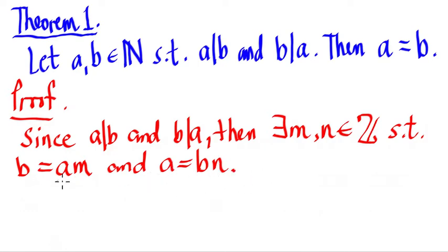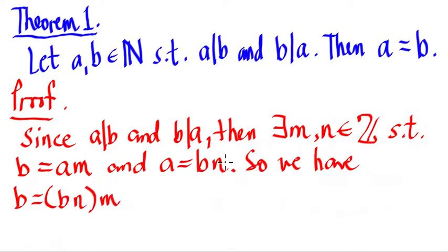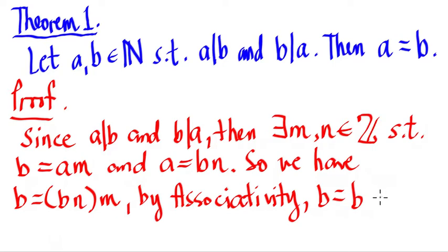We will try to substitute: since a is equal to b times n, we substitute this a value into the equation b equals a times m. So we have b is equal to b times n times m. By associativity, we can regroup to get b is equal to b times nm.